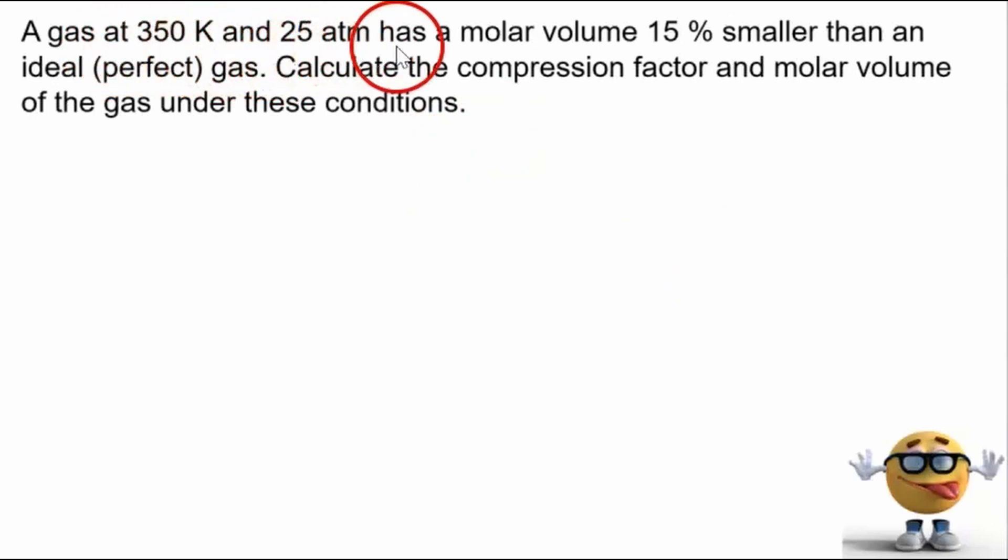A gas at 350 Kelvin and 25 atmospheres has a molar volume that's 15% smaller than an ideal or perfect gas. And the question is asking us to calculate the compression factor and molar volume of the gas under these conditions.